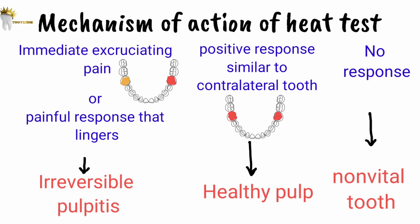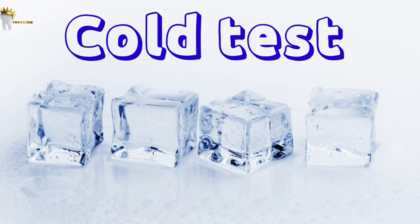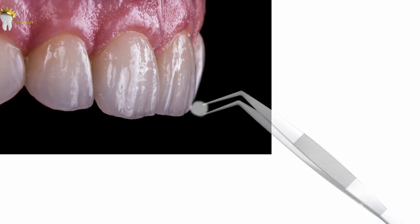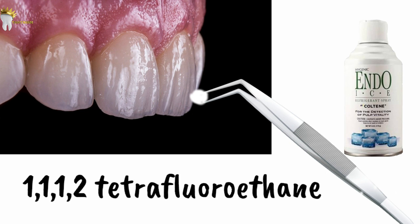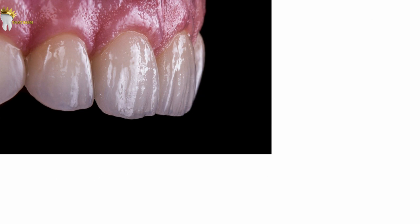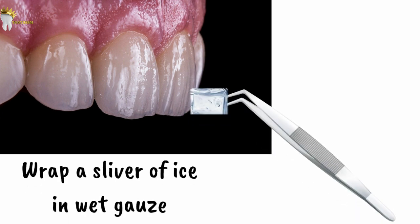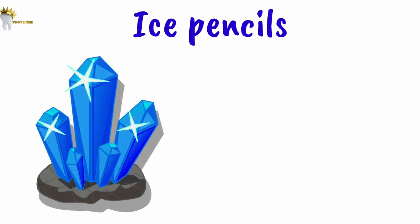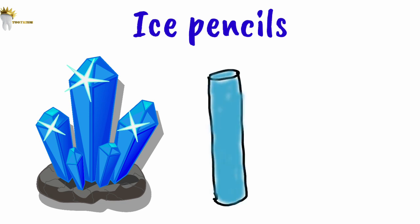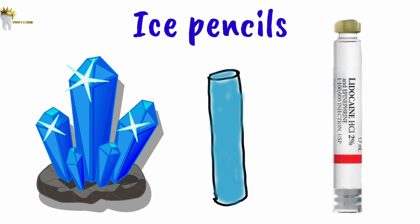For the cold test, the most common method is applying a cotton pellet saturated with Endo Ice — which is 1,1,1,2-tetrafluoroethane — to the tooth. Another method is wrapping a sliver of ice in wet gauze and placing it against the facial surface. Cold is applied for a maximum of 15 seconds. Ice pencils can be made by filling a plastic straw with water and freezing it upright, or by filling discarded anesthetic cartridges with water and freezing them.